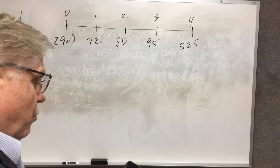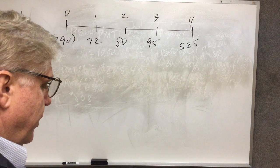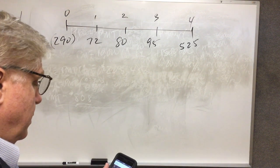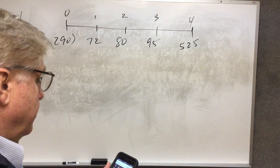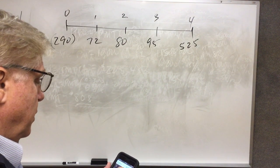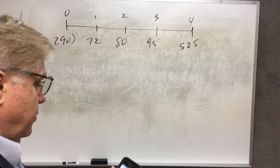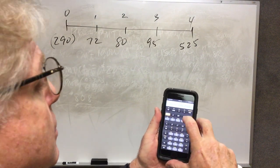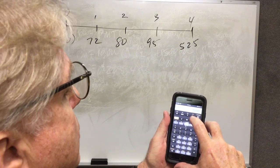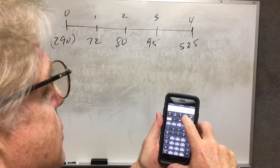It's prompting me for CF0. 290, that's a negative, I enter that. Scroll down: 72, enter. Scroll down to C2: 80, enter. Scroll down to C3: 95, enter. Scroll down to C4: 525, enter. I can always check my values by simply scrolling back through there: minus 290, 1, 2, 3.